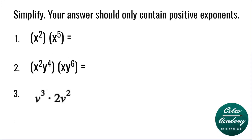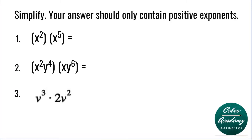Simplify. Your answer should only contain positive exponents. Question number one: x squared times x to the fifth. According to the product rule, we simply keep the base x and add the exponents 2 and 5. So the answer is x to the power of 7.